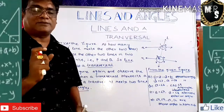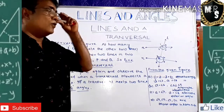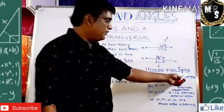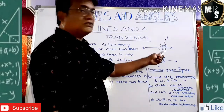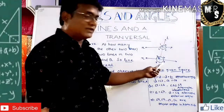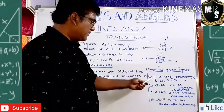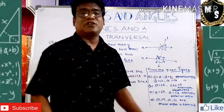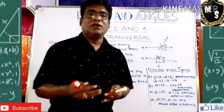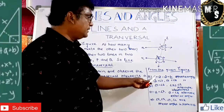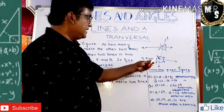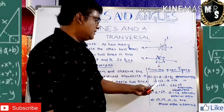From the given figure, observe that angle 1 is opposite to angle 3, angle 2 is opposite to angle 4. Similarly, angle 5 is opposite to angle 7, and angle 6 is opposite to angle 8. These are called vertically opposite angles. So angle 1 equals angle 3, angle 2 equals angle 4, angle 5 equals angle 7, and angle 6 equals angle 8.